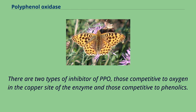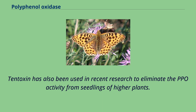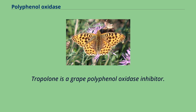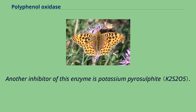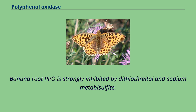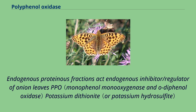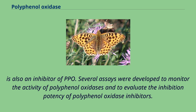There are two types of inhibitors of PPO: those competitive to oxygen in the copper site of the enzyme and those competitive to phenolics. Tintoxin has also been used in recent research to eliminate PPO activity from seedlings of higher plants. Tropolone is a potent polyphenol oxidase inhibitor. Another inhibitor is potassium pyrosulfite. Banana root PPO is strongly inhibited by dithiothriotol and sodium metabisulfite. Endogenous proteinous fractions act as endogenous inhibitor/regulator of onion leaves PPO; potassium dithionite is also an inhibitor of PPO.